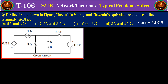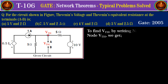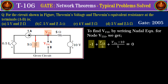Next, we shall solve the question from GATE 2005. For the circuit shown, we are required to identify the Thevenin's voltage and Thevenin's equivalent resistance at terminals A and B. The network is a two-junction node network, and VThevenin is the voltage between A and B, also the node voltage. Writing the nodal equation: minus 1 plus phi_thevenin divided by 5 plus (phi_thevenin minus 10) divided by 5 equals zero.